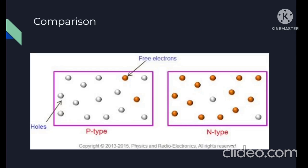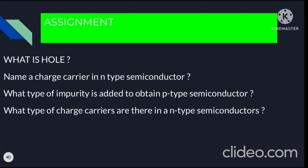Here is a comparison between the P-type and the N-type semiconductor. In the P-type semiconductor, there is a large number of hole formation, so the holes are the majority charge carriers. For the N-type semiconductor, there are a large number of free electrons which behave as the majority charge carriers. To recall the concept, here are a few questions as assignment: Number 1, what is a hole? Number 2, name a charge carrier in N-type semiconductor. Number 3, what type of impurity is added to obtain P-type semiconductor? Number 4, what type of charge carriers are there in an N-type semiconductor?